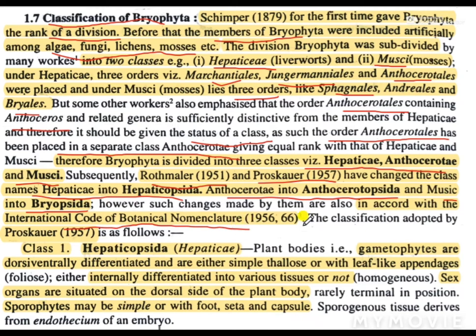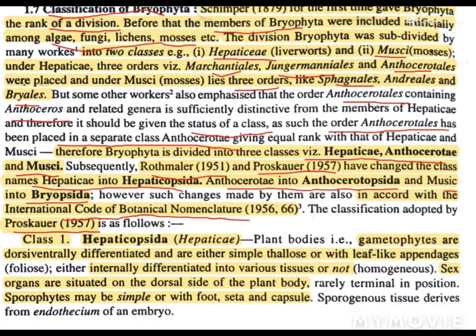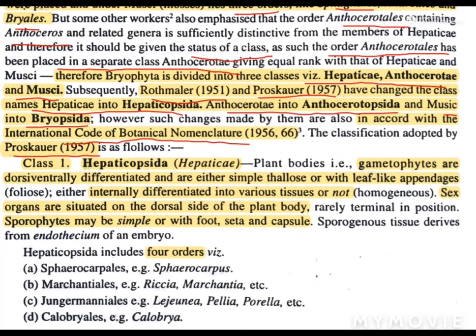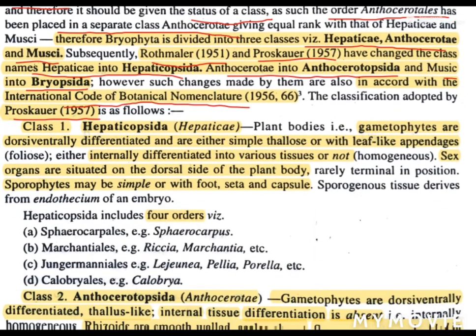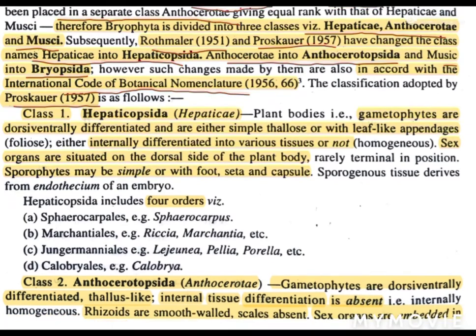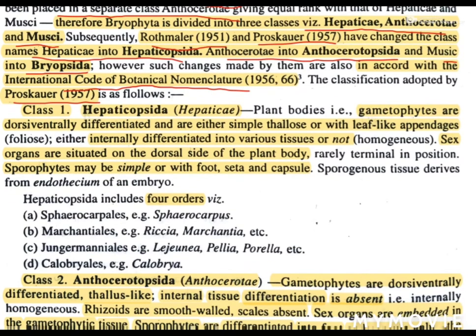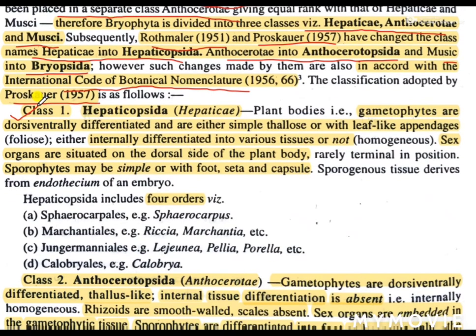Now, the classification adopted by Prosauer in 1957 is as follows. There will be three classes, and we will study each of the classes with their distinctive characteristics in detail. Let's see the first class: it is Hepaticopsida.